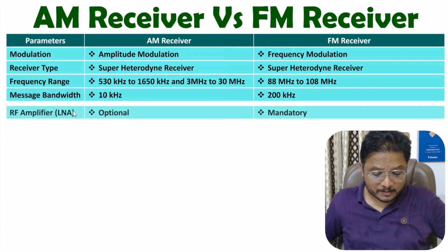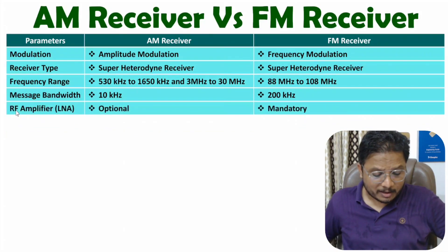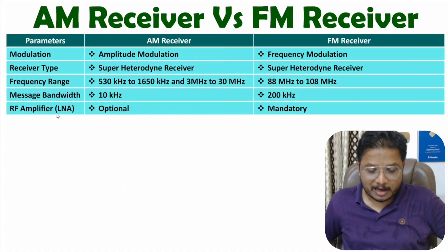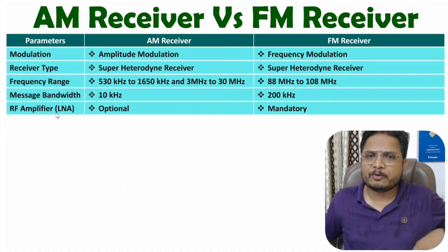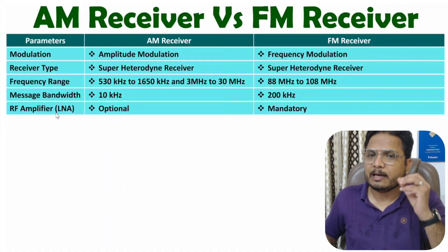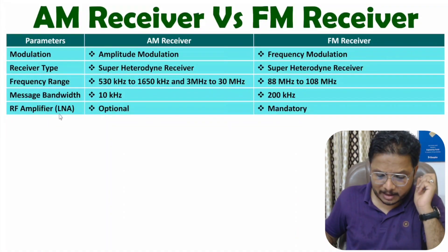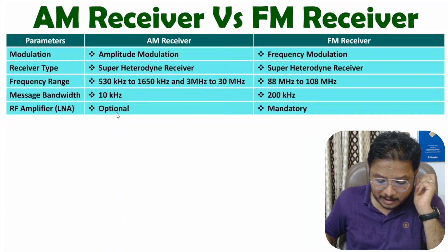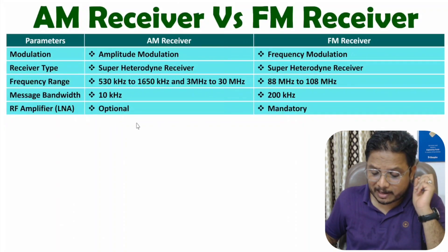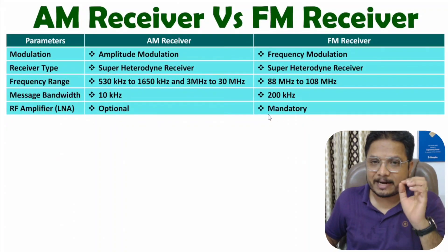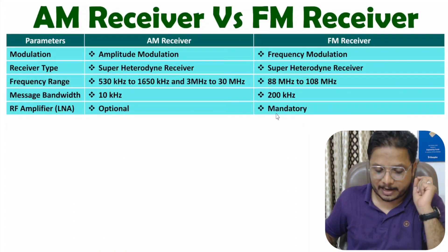The next parameter is whether an RF amplifier is required. An RF amplifier is usually a low noise amplifier. In AM receiver it is optional, while in FM receiver it is mandatory.